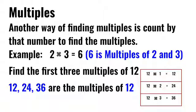Find the first 3 multiples of 12. 12 ones are 12, 12 twos are 24, 12 threes are 36. 12, 24, and 36 are the first 3 multiples of 12.